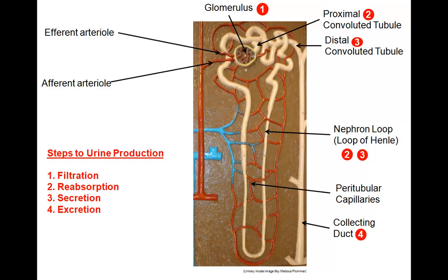The four steps to urine production are: one, filtration, which takes place at the glomerulus. The second step, reabsorption, takes place primarily along the proximal convoluted tubule and the nephron loop. Reabsorption takes materials back up from the filtrate and moves it back into the peritubular capillaries so it will remain in the body. Things such as glucose and amino acids, nutrients, and some water may be reabsorbed here.